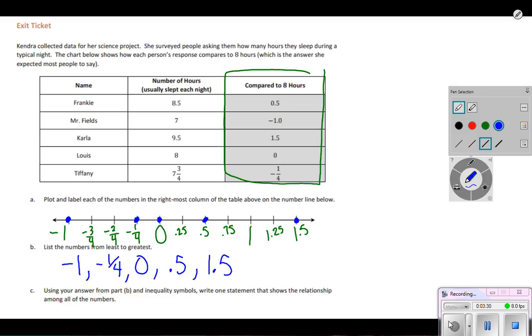So the next step, it says using those answers and inequality symbols. So we're going to use either greater than or less than to write one statement that shows a relationship between all of the numbers. So I already have them in order from least to greatest. So it just makes sense for me to rewrite this using less than symbols. So I don't have to change everything around. So I'm going to go ahead and just go in my same order.